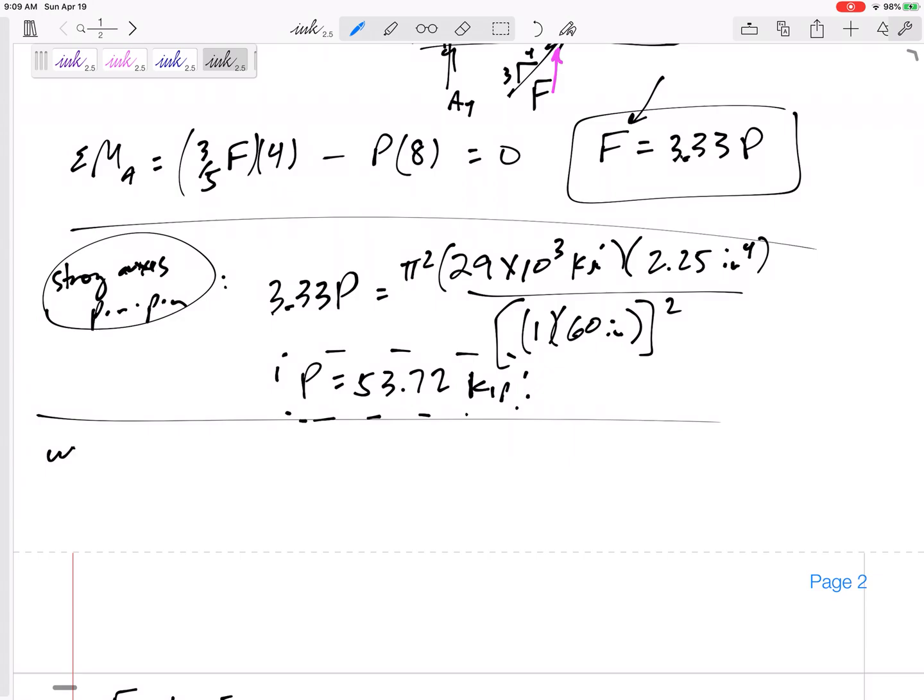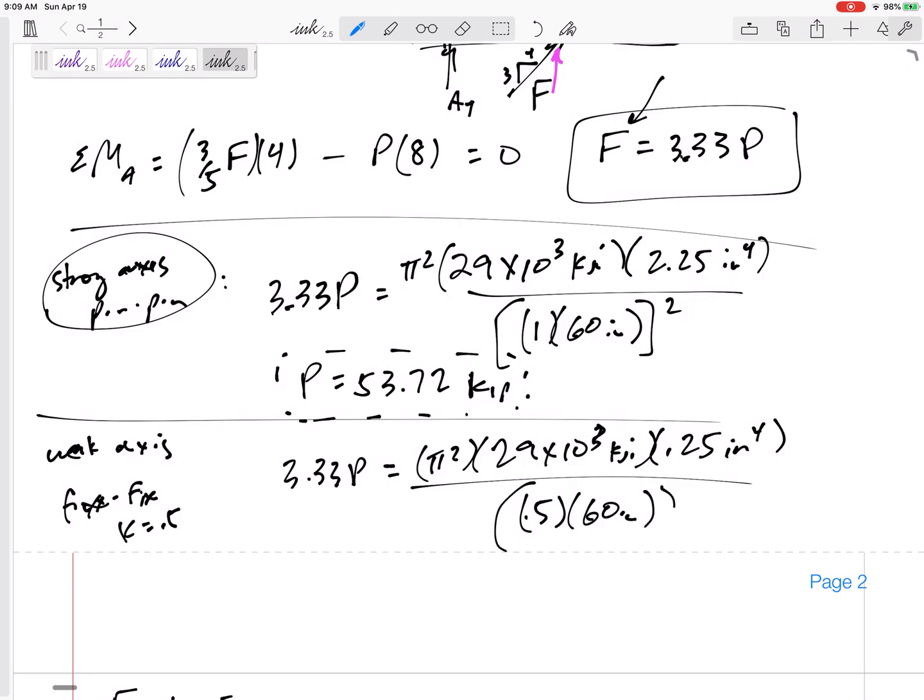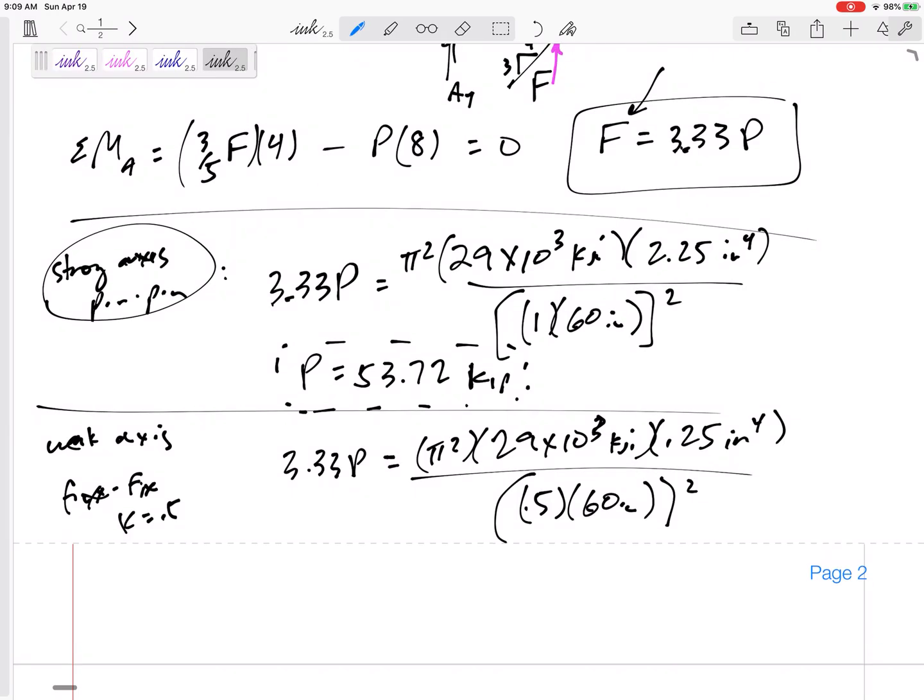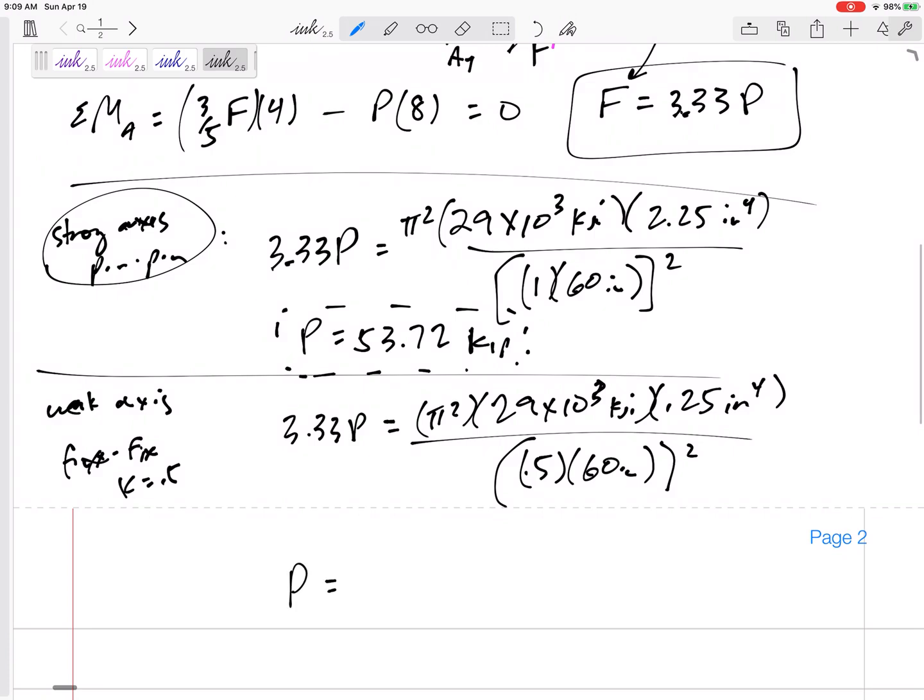Let me test the weak axis. The weak axis is fixed and fixed, that's a K value of 0.5. So 3.33P equals pi squared, same material 29 times 10 to the 3 KSI, but in this orientation the I is the weak 0.25 inches to the fourth, divided by K of 0.5 times 60 squared. I would get a force P of 23.9 kips.